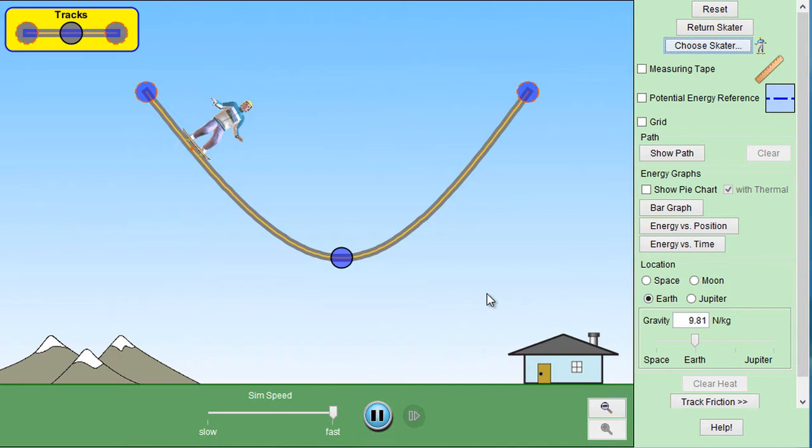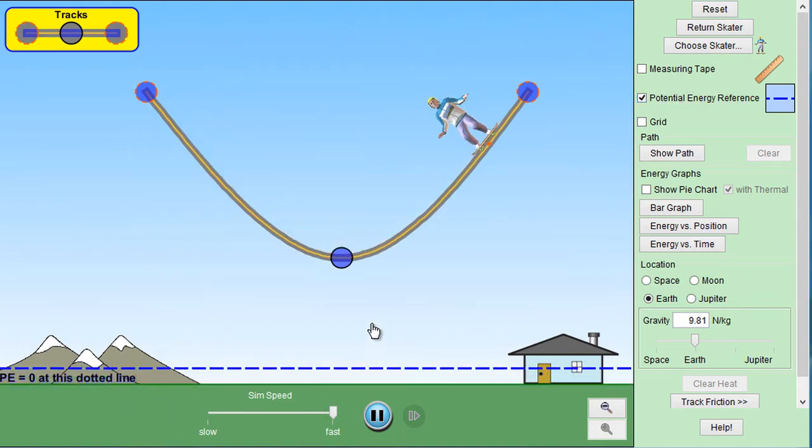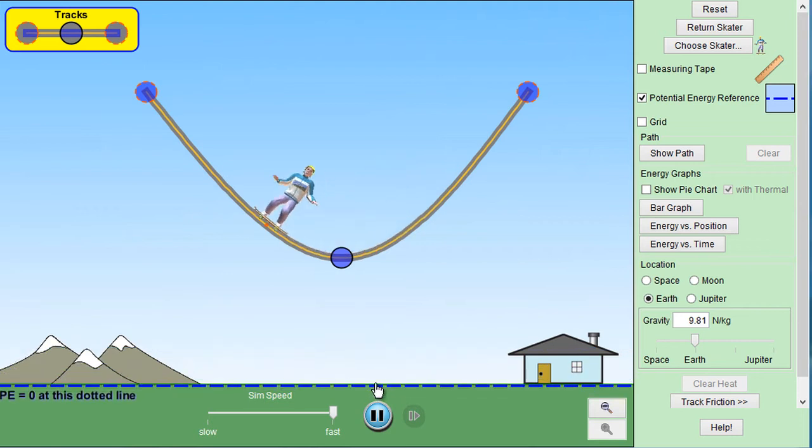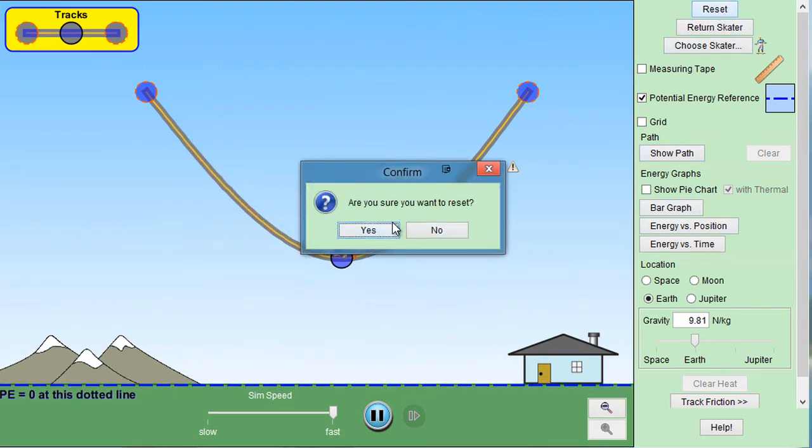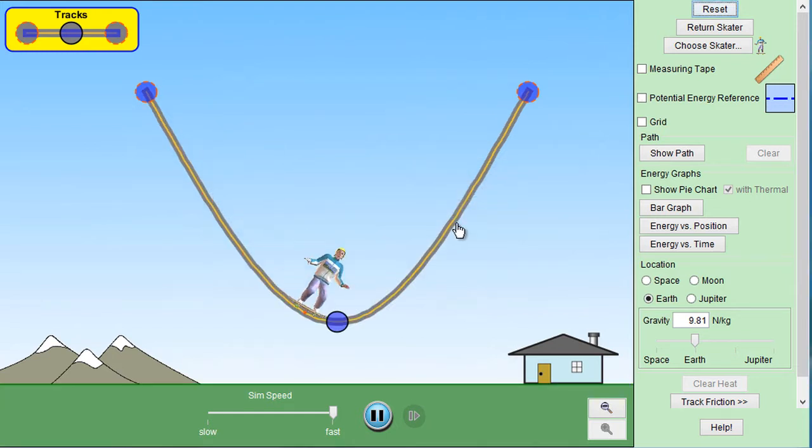Other things here. You can put in a potential energy reference. So here it says PE equals zero at this dotted line. You can raise this line to wherever you want. And I'm going to hit Reset just to put everything back to the way it was.